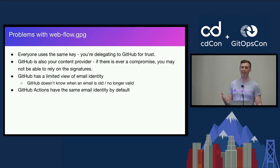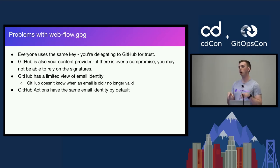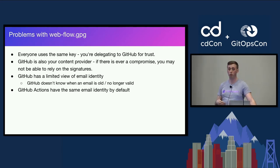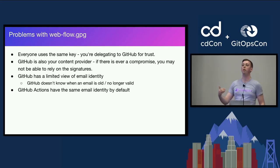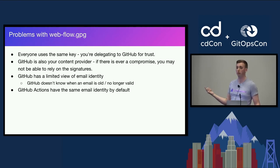GitHub doesn't necessarily have the best visibility into identities. Git uses emails for commit data, but it doesn't really know if you still have access to that email. For example, before I was at ChainGuard, I was at Google — I have an @google.com email still associated to my GitHub account. GitHub doesn't know I don't work at Google anymore. There's nothing stopping me from making a commit with my @google.com email even though I no longer have access to it, and I'll still get that verified checkmark.